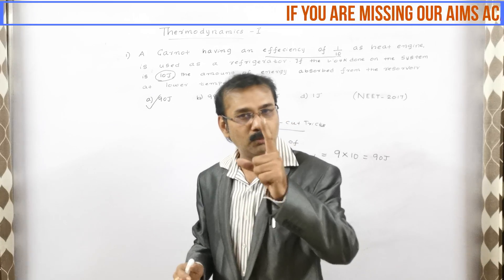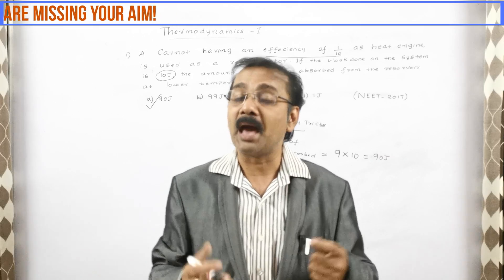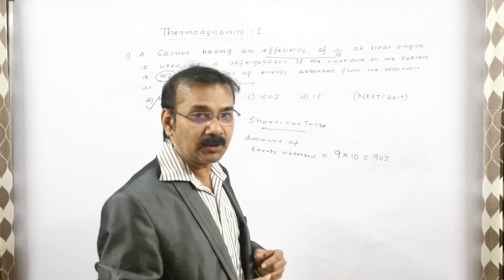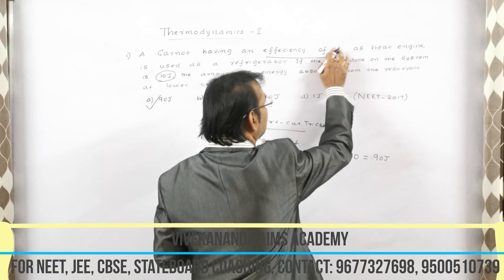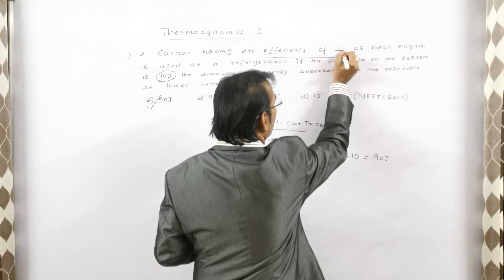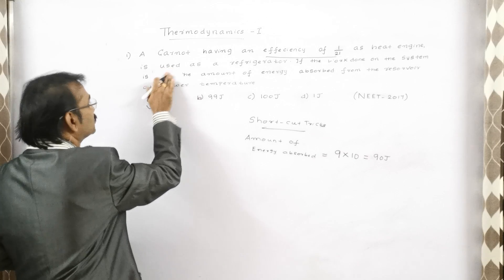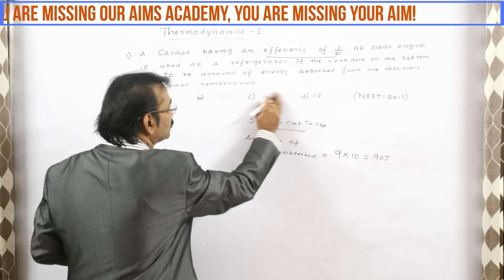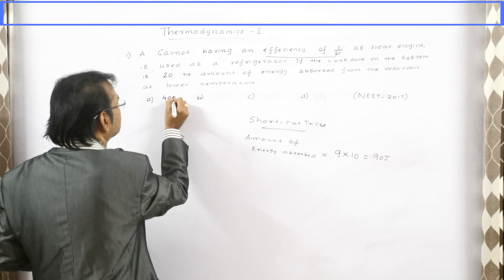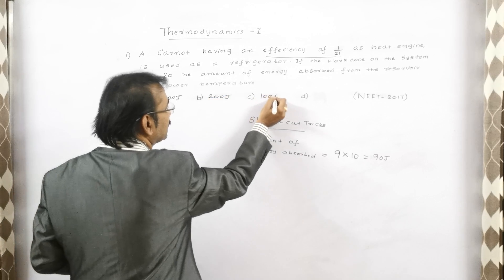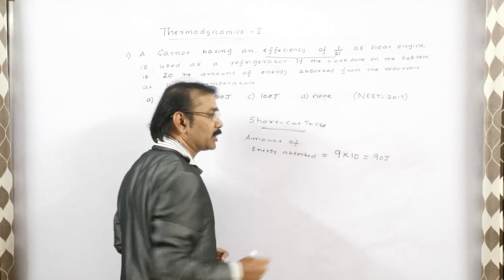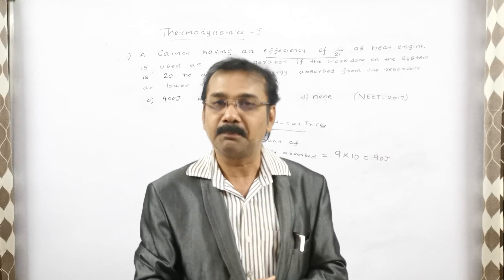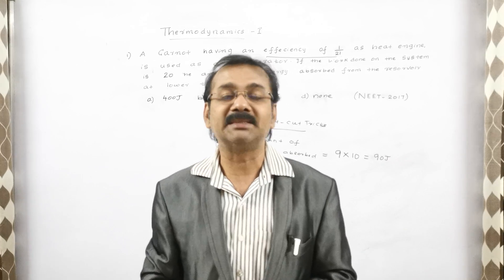Now it is time for one more practice sum of the same model. I expect this question may appear in the coming 2021 exam. The efficiency is now 1 by 21, and the work done is 20. The answer options are: 400 joules, 200 joules, 100 joules, and 9. Please place your answers in the comments area — you can solve this in your mind using the same shortcut trick.